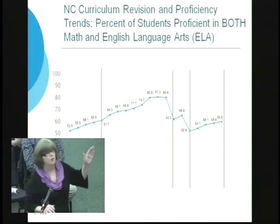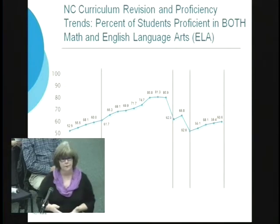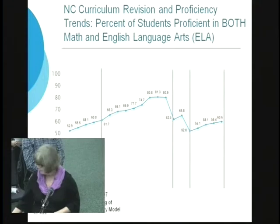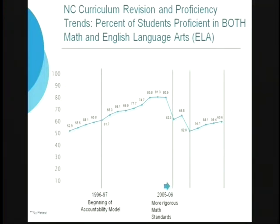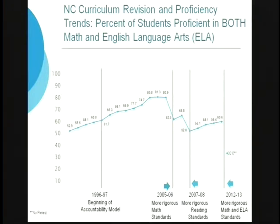When we change the curriculum and assessment, we tend to get a dip. In 1996 was the beginning of the accountability model; in 2005-6 we implemented more rigorous math standards and saw a dip. In 2007-8 we implemented more rigorous reading standards — note the standards were staggered so teachers didn't have to learn all new curricula in one year. But in 2012-13 we implemented all new curriculum and saw an extreme dip. We also didn't have a retest last year, as we had no data to gauge whether a student was successful the first time.